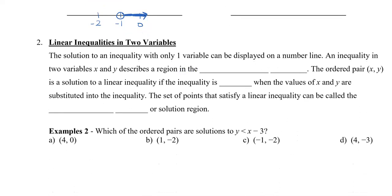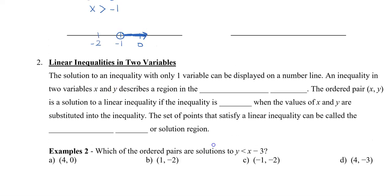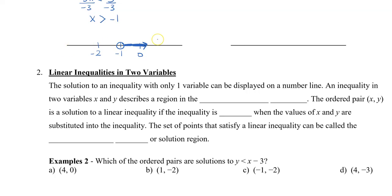Now let's go to linear inequalities in two variables. The solution to an inequality with only one variable can be displayed on a number line because the number line only represents x. An inequality in two variables, x and y, means we need to describe a region in the Cartesian plane. The ordered pair (x, y) is a solution to a linear inequality if the inequality is true when those values are substituted in. The set of points that satisfy the inequality is called the solution set or the solution region.